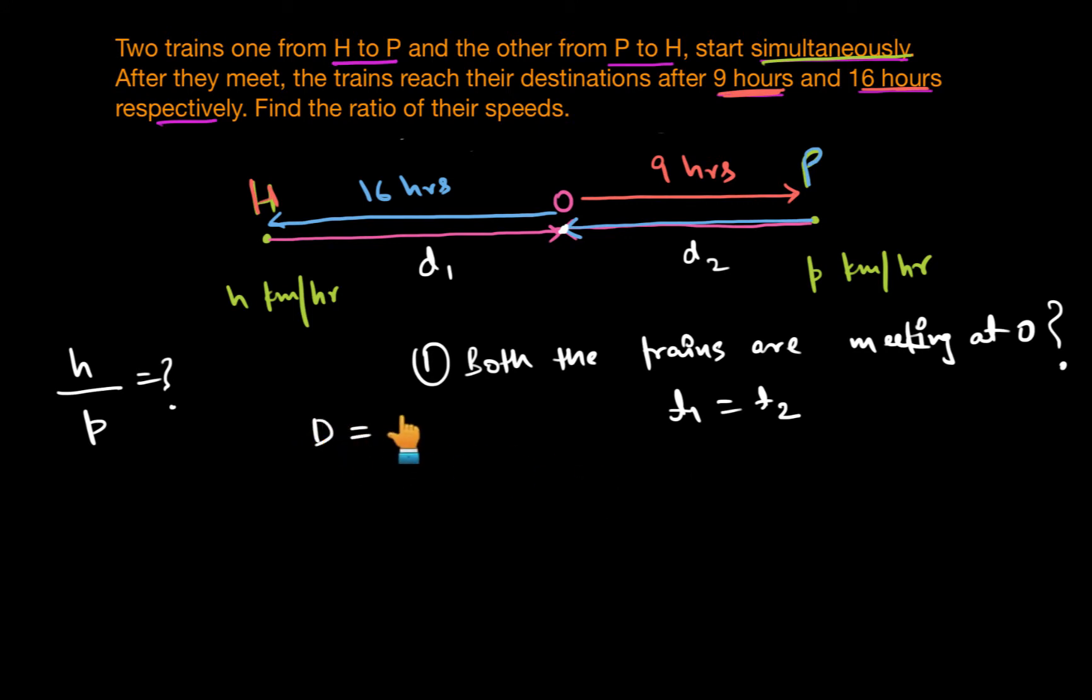Using the relation distance equals speed into time, we can write time is distance upon speed. This means D1 upon H would be equal to D2 upon P. From here we can write D1 upon D2 is H upon P. This is the first relation that we got from the given situation.